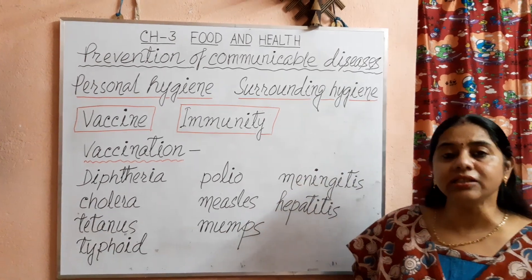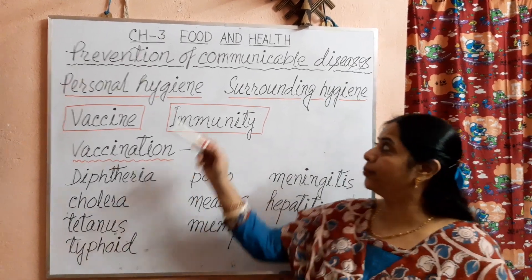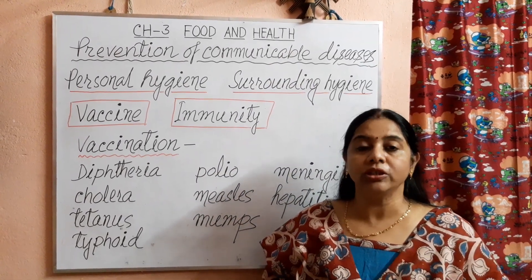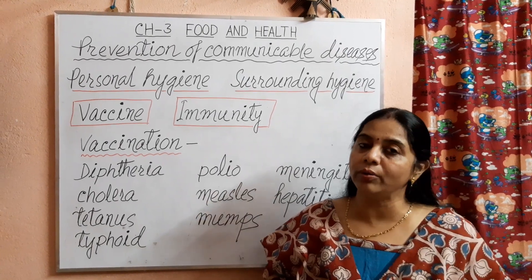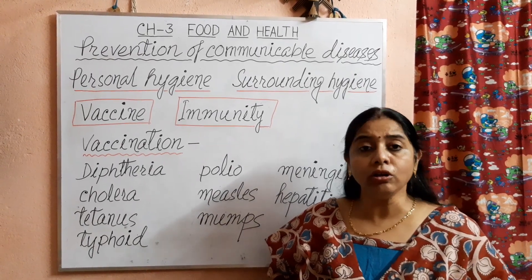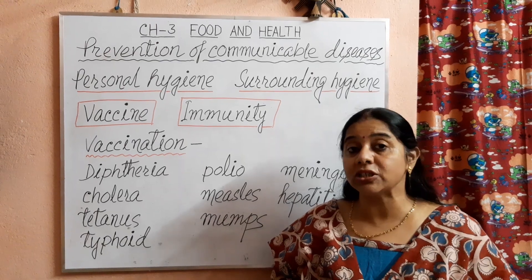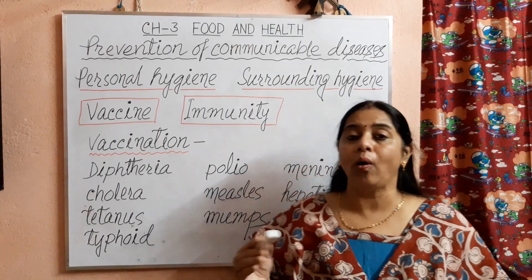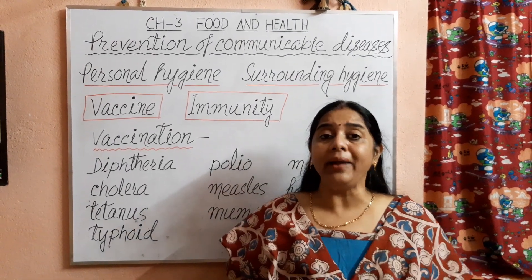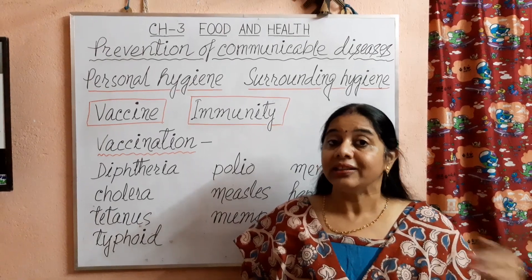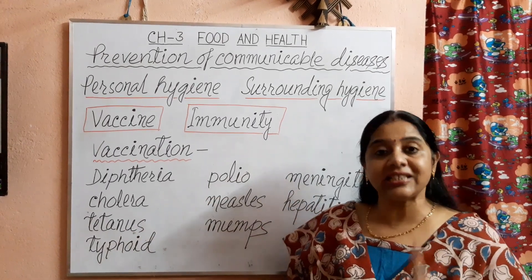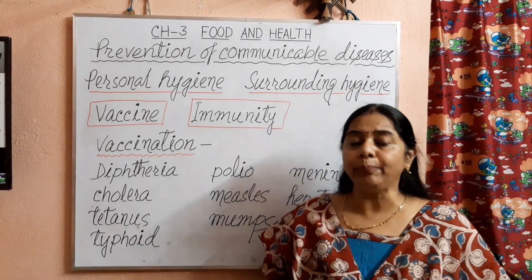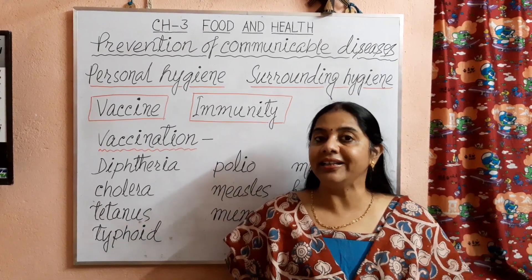Hello students, this is our 5th class on the chapter food and health. In our last classes, we learnt about diseases — communicable diseases and non-communicable diseases. Non-communicable diseases are not spread from one person to another. But communicable diseases are spread from an infected person to healthier persons, that's why it is very necessary for the prevention of communicable diseases. We have to prevent the spread of communicable diseases.